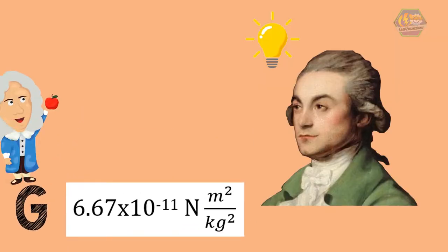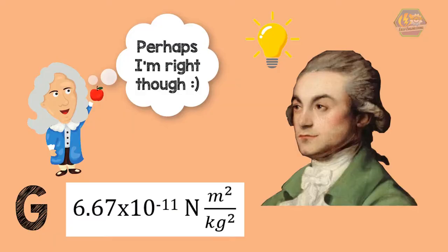Therefore, Newton was right all along. Because even though he didn't know the exact value of G at that time, he still had enough to establish his law of universal gravitation.